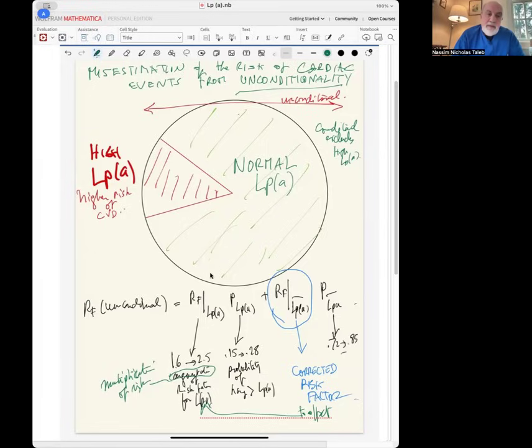So when they derive the risk factors and recommendations - hey, you need to lower your LDL - they bundle these together. So the risk factor unconditional should be the risk factor conditional on being in the category of high LPA.